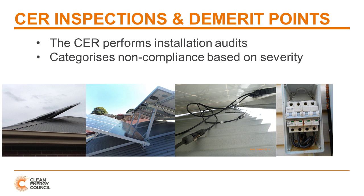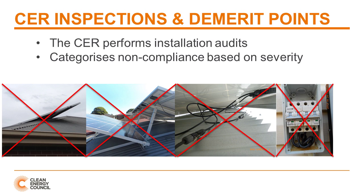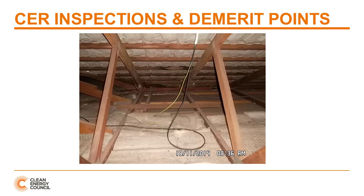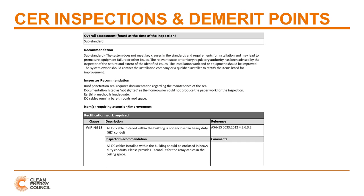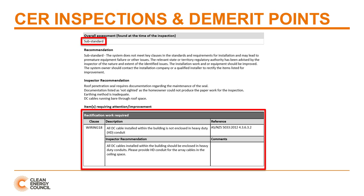Where the Clean Energy Regulator performs installation audits, they will categorise issues of non-compliance based on the level of severity. In this example of non-compliance, the installer has failed to enclose DC cable in HD conduit. As such, this electrical work is deemed as substandard, and the audit report will include the nature of the issue and the relevant clauses that must be adhered to.